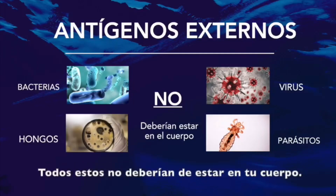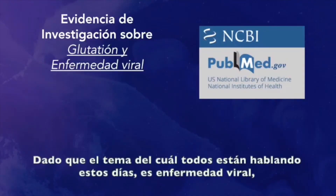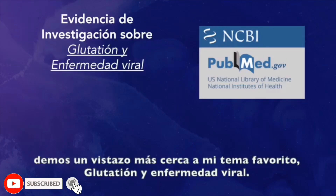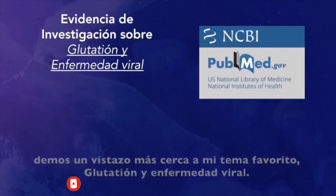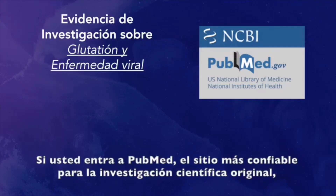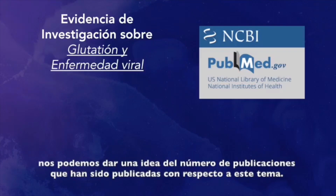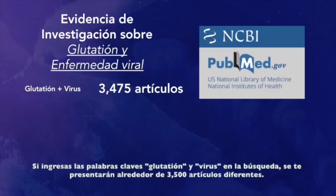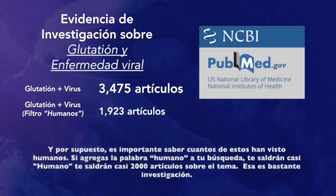All of these are not supposed to be in your body. Now, given that the topic everybody is talking about these days is viral disease, let's take a closer look at my favorite topic: glutathione and viral disease. If you go to PubMed, which is the most reliable source of original research, let's get an idea of how many publications have been posted there on this very subject. If you enter the key terms glutathione and virus into the search engine, you're going to get back somewhere around 3,500 different articles. And of course, it's important to know how many of these have looked at humans — if you add the filter human to that, you're coming up with almost 2,000 articles on this topic.